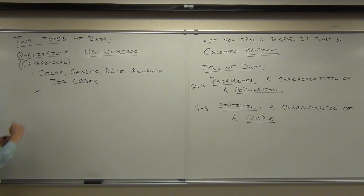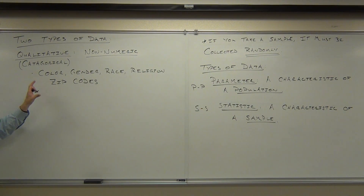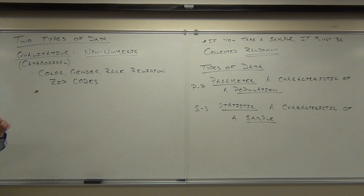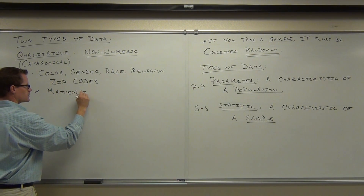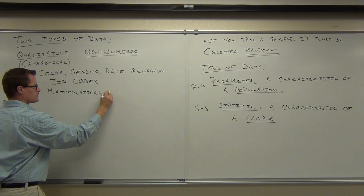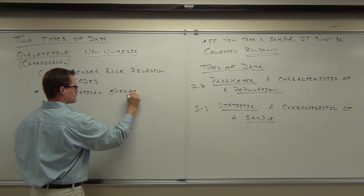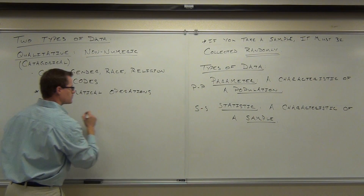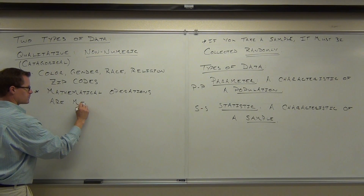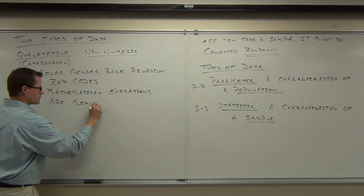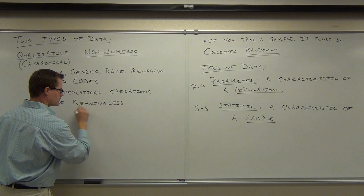Here's the big key: qualitative data is data where mathematical operations are meaningless. You can't really do math with it — you can't add them, subtract them, or multiply them. Mathematical operations are meaningless.